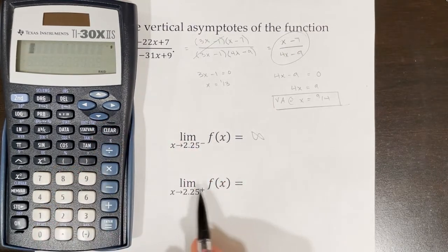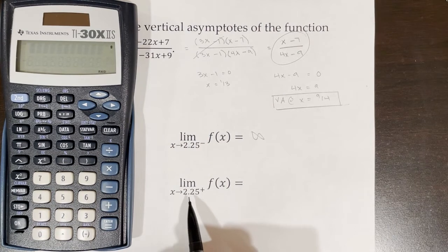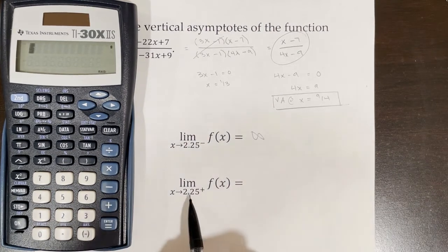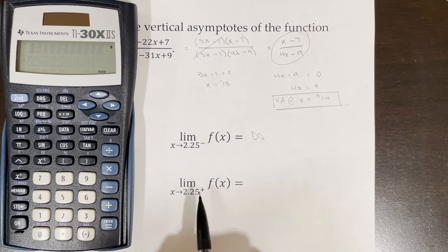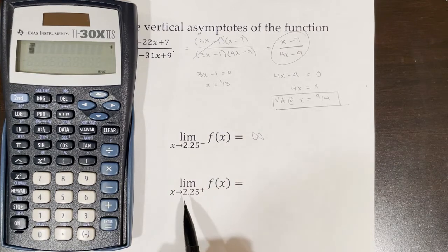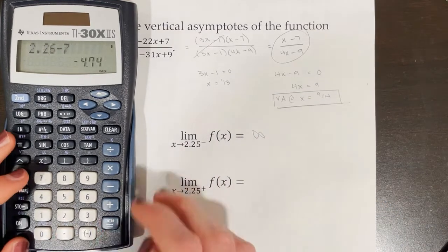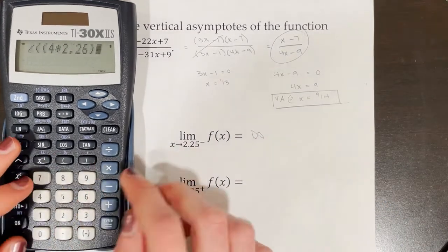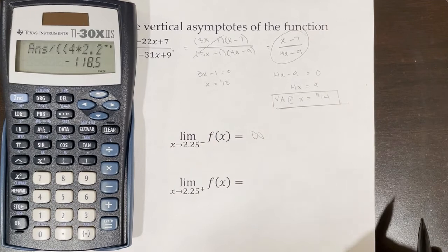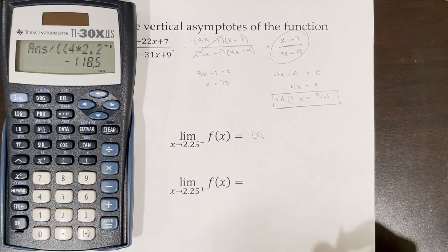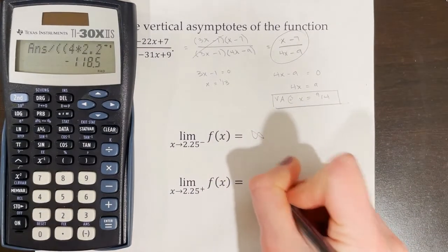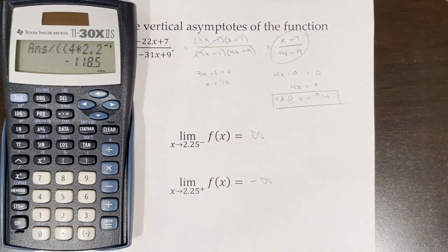To find the limit from the right side, we plug in a number just above 2.25, such as 2.26, into the same function. The result is approximately −118.5, which is close enough to tell us the function is going to negative infinity from the right side.